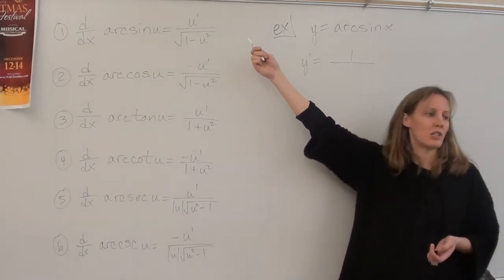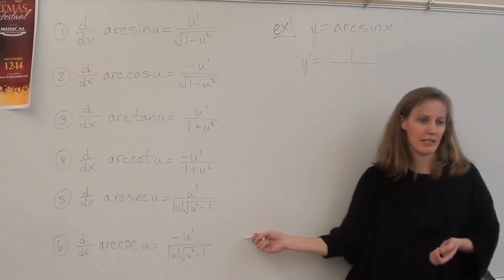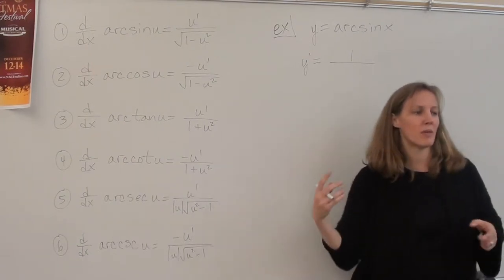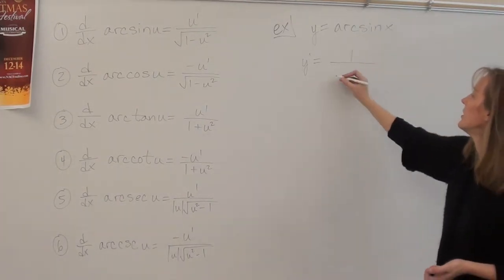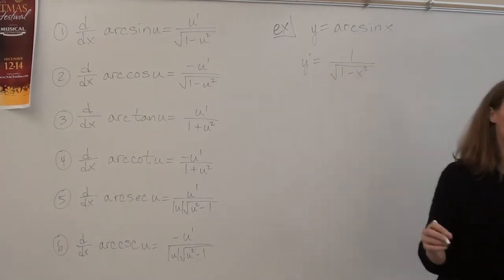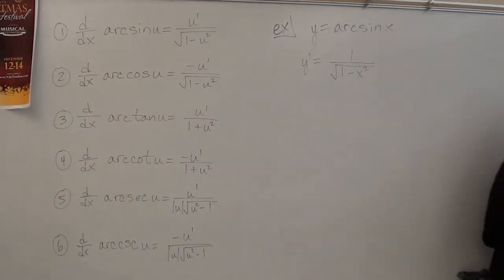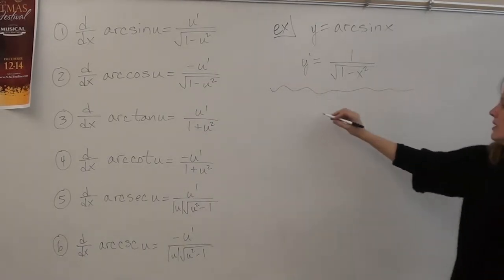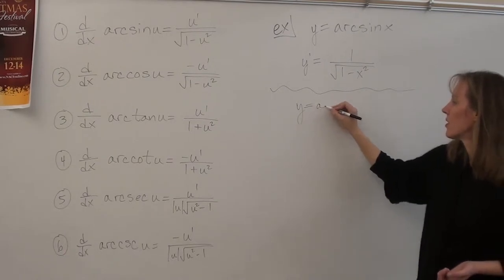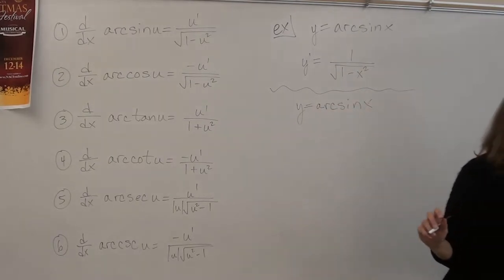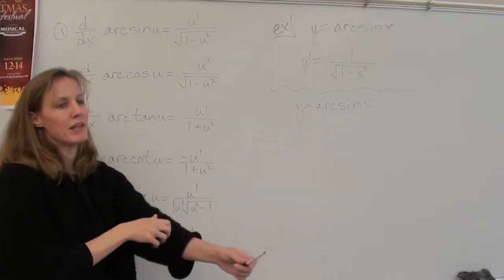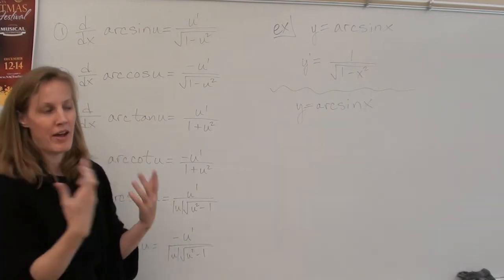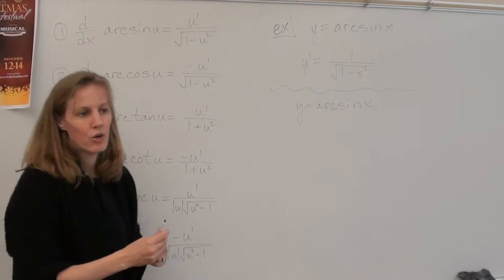Arc sine is one minus u squared. Arc secant is u squared minus one. And arc secant has an absolute value. So anyway, you'll get them straight eventually. But for arc sine, it's the square root of one minus x squared. Because your u is x. How did you do that? Okay. So, that's method one, right? Method one is just doing it. Using the formula and plugging in and doing it.